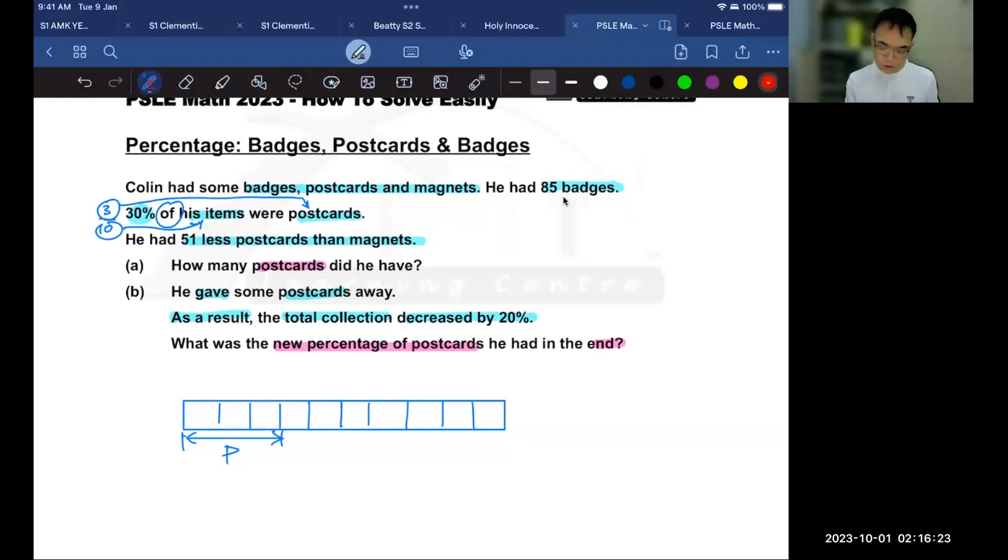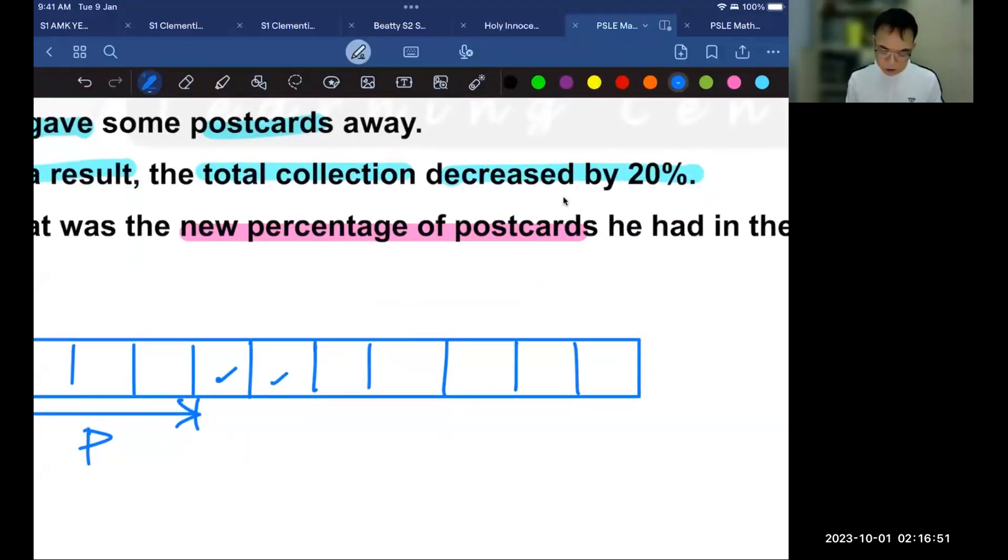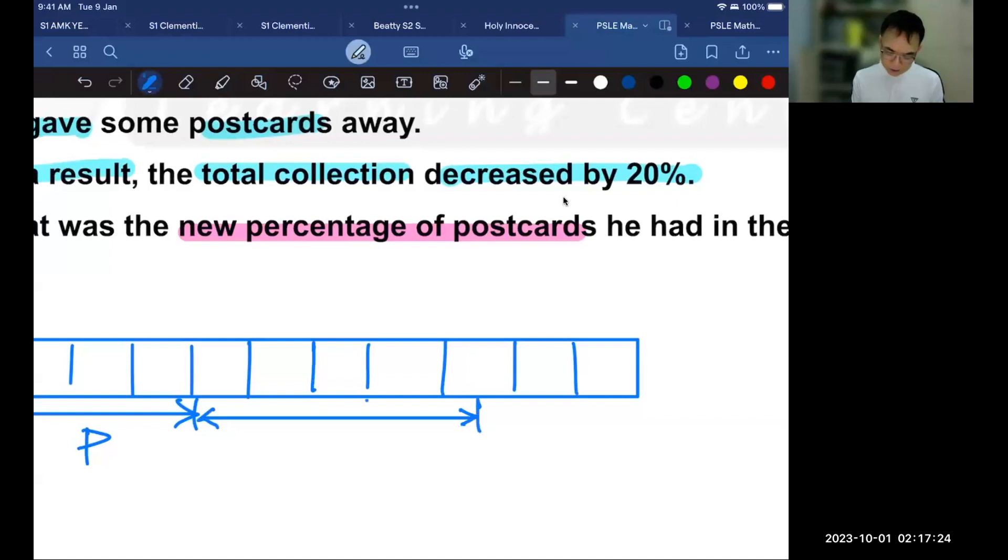The next bit of information we're going to use is that he had 51 less postcards than magnets. This means that the magnets were more and they were 51 more. So this means that if the postcards were 3 units, then the magnets would be 3 units plus an additional 51. So 3 units, these will be the 3 and then I'm going to add on another 51. Now, I don't know how much that is, so I'm just going to randomly think about maybe this as 51. So in total, when I were to draw this portion, it will look something like this. 3 units and then a bit more. So now let's say that this is the magnets, made up of 3 units and 51.